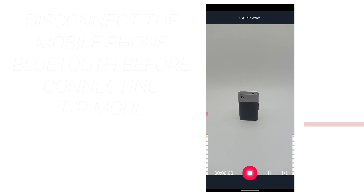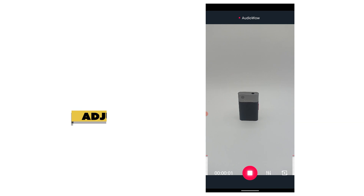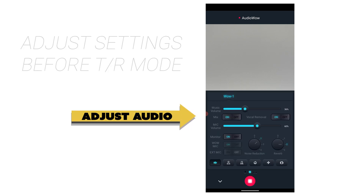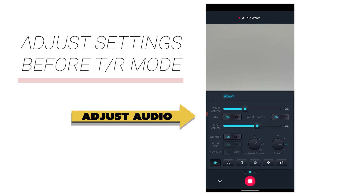Tuning is not possible in TR mode. You need to connect to the phone with Bluetooth before connecting in TR mode. After adjusting settings in the app, disconnect the phone and then resume TR connection.